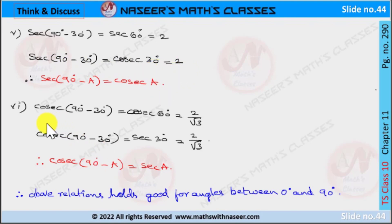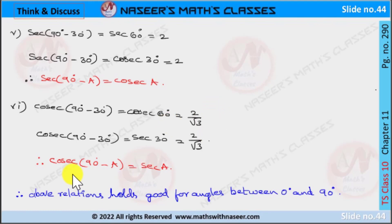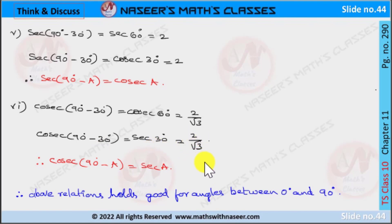For the sixth relation, cosec(90° - a) = sec(a): if a = 30°, then cosec(90° - 30°) = cosec(60°). We already know cosec(60°) = 2/√3. By complementary angles, cosec(90° - a) = sec(a), so cosec(90° - 30°) = sec(30°). We already know sec(30°) = 2/√3. Therefore, the above relations also hold for angles between 0° and 90°.